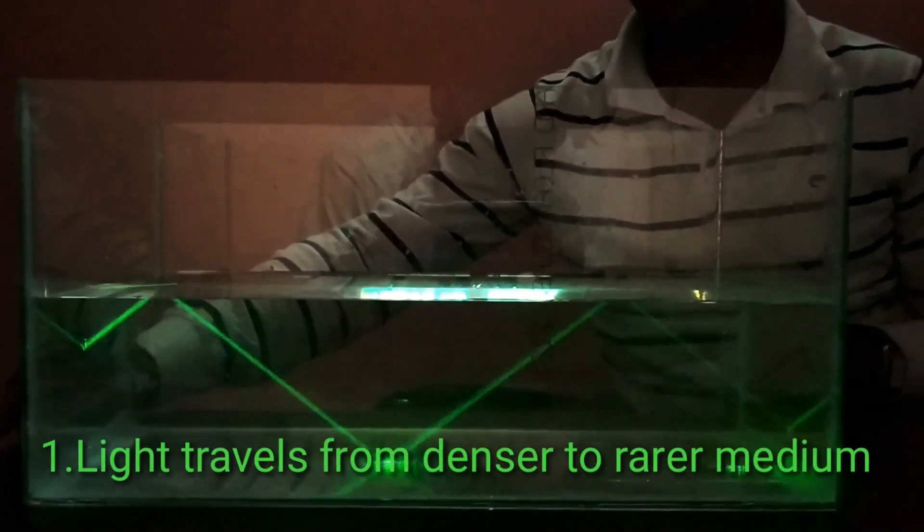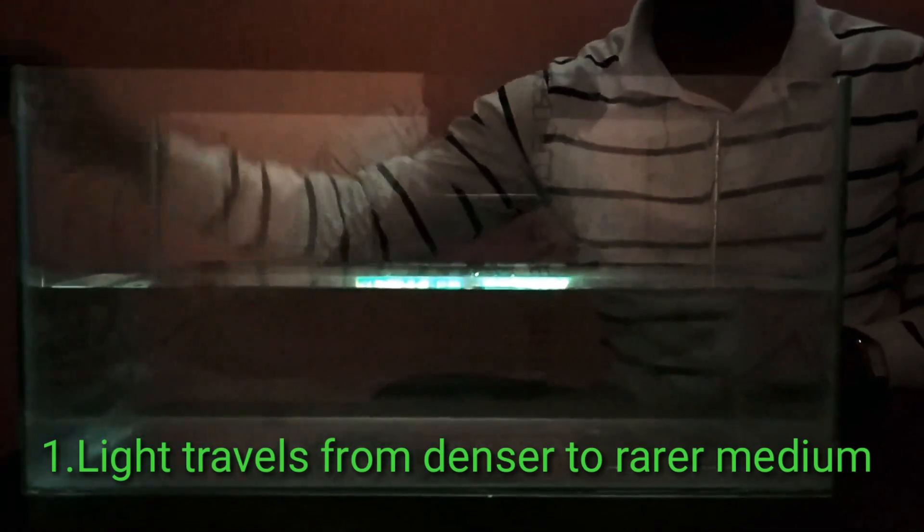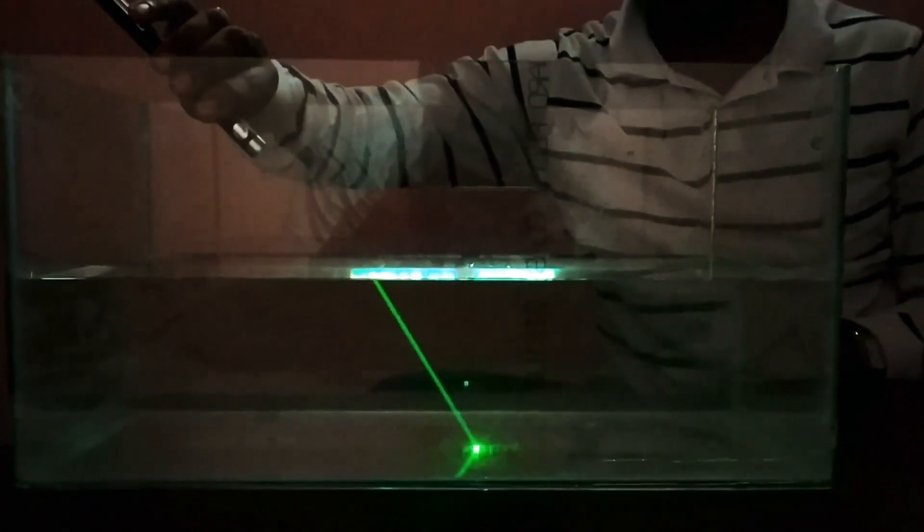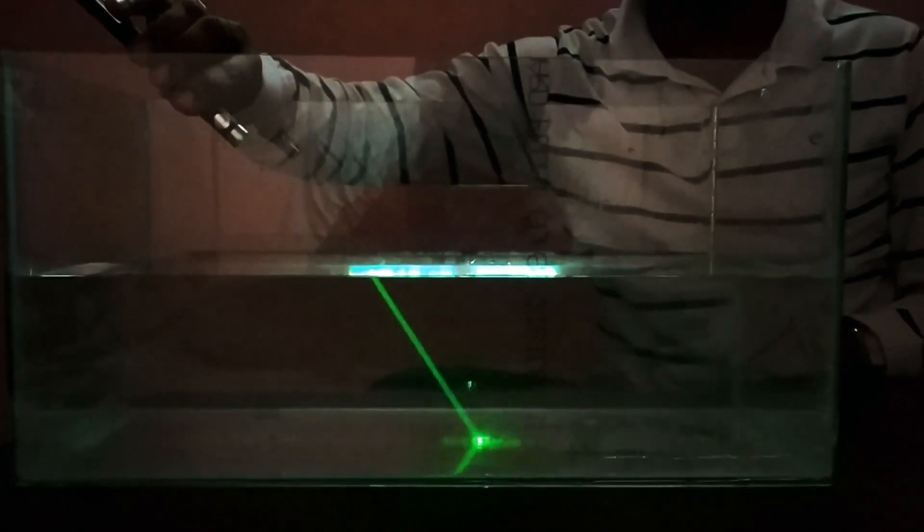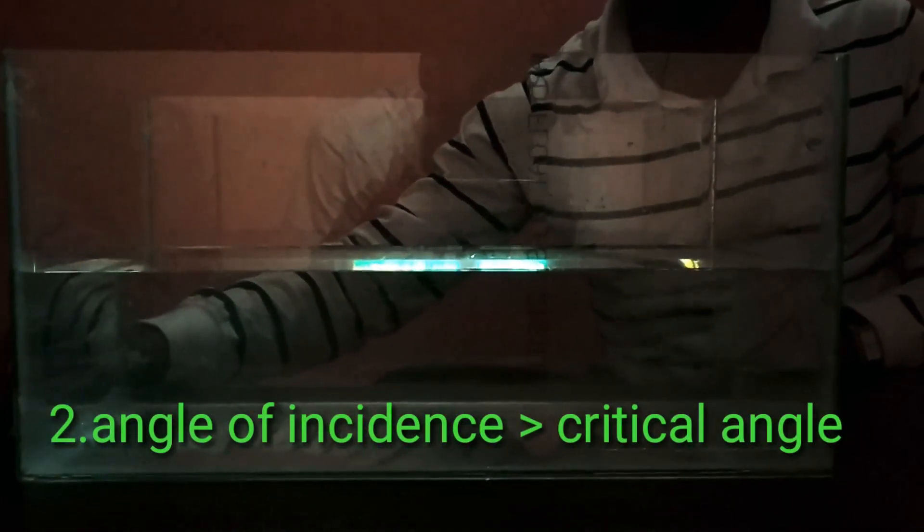There are two conditions for total internal reflection to happen. First one: the light ray should travel from denser medium to rarer medium, so here from water to air. See, when I incident the light ray from air to water, total internal reflection will not happen.